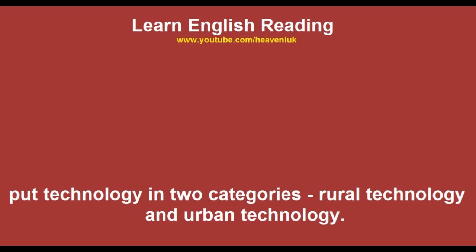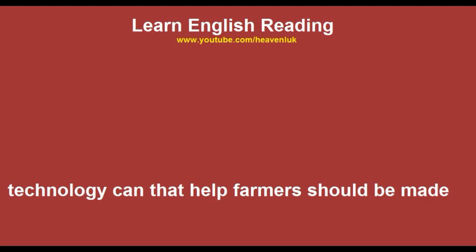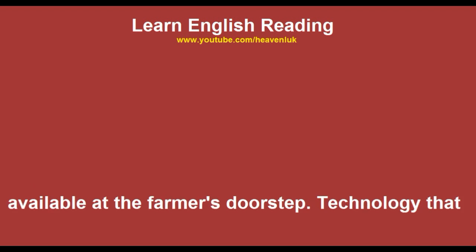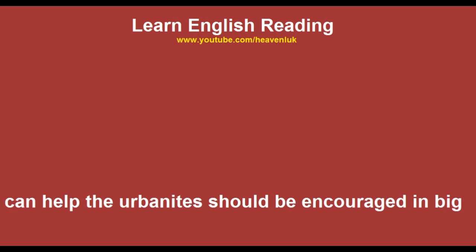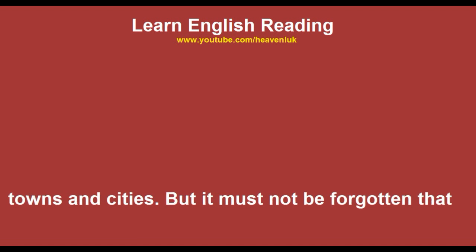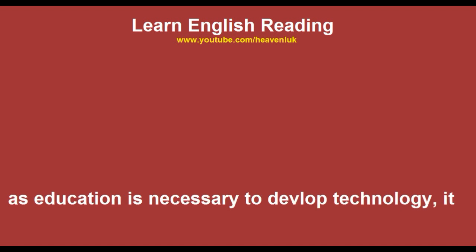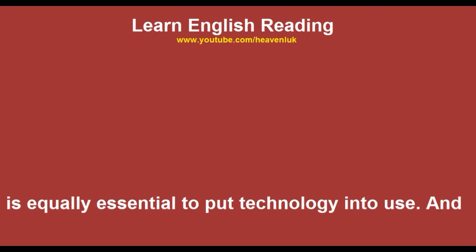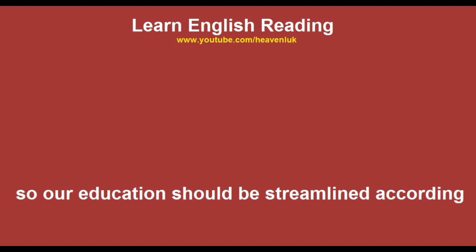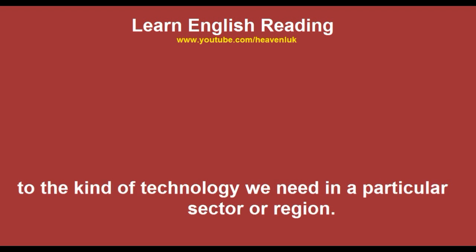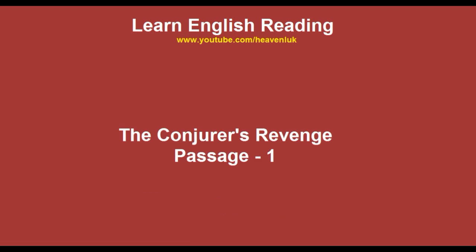In other words, we can put technology in two categories: rural technology and urban technology. Technology that can help farmers should be made available at the farmers' store. Technology that can help urbanites should be encouraged in big towns and cities. But it must not be forgotten that as education is necessary to develop technology, it is equally essential to put technology into use, and so our education should be streamlined according to the kind of technology we need in a particular sector or region.